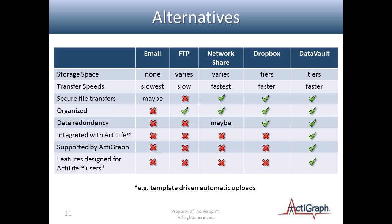The network share is definitely the fastest by far because it's set up on your local network. But if you have a remote user not on your network, they'll have to go through slower technology like a VPN, not to mention the bureaucracy of dealing with IT to set up the network share, adjust storage amounts, and ensure data is being backed up securely.